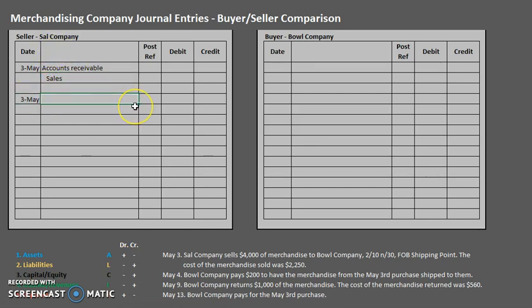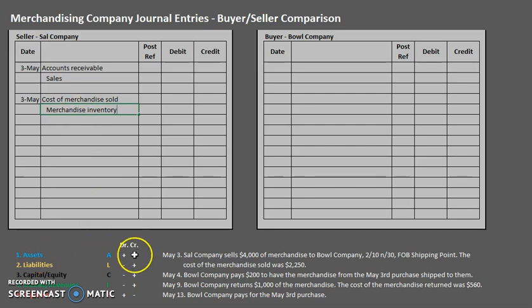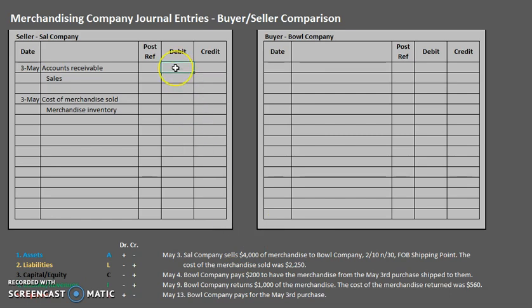We are also going to have another entry on May 3rd for the cost of merchandise that we are selling. We're going to debit Cost of Merchandise Sold to record that expense, and we are also going to credit Merchandise Inventory to recognize that this asset is going down. Now let's talk about numbers — this first entry is going to reflect the sales price. Since we're using the net method, we can't simply take that $4,000 and plug it in.